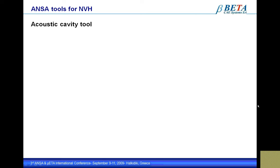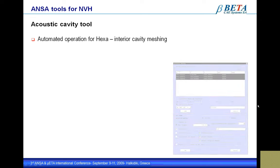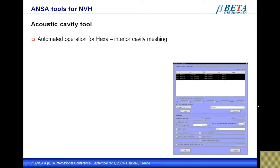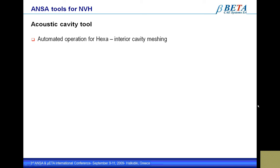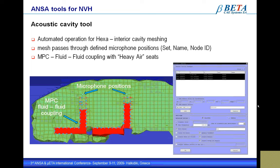A typical NVH modeling task is the creation of the interior fluid cavity of the passenger compartment. ANSA provides a fully automated tool for this. Its main capabilities are that a hexahedral solid mesh passes through user-given microphone positions, that the algorithm is insensitive to small holes — which prevents the mesh from passing through user-given hole diameters — and provides various options such as updating the acoustic model to prepare the creation of the acoustic coupling in NASTRAN. It is also possible to create the skin shell mesh of the cavity volume mesh. After getting the cavity mesh, the user can easily create the MPC fluid-fluid coupling between the cavity of the cabin and the air volume of the seats.